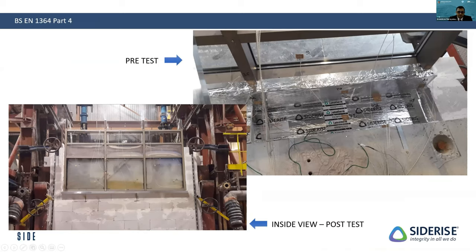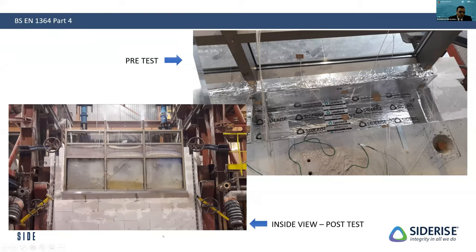It is important to know that you test for the void size and get a listing. We have seen engineering judgments that allow testing for a 100mm gap and extrapolating to 200 or 300mm. However, an approach where you test for the largest gap should be adopted, so you have evidence of performance rather than relying on a desktop study. Use a system or listing as close as possible to your application, and do not mix multiple listings.